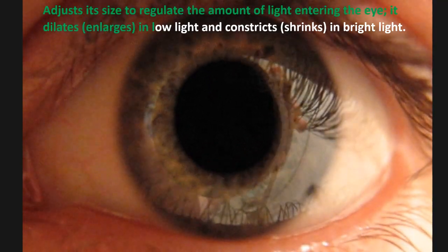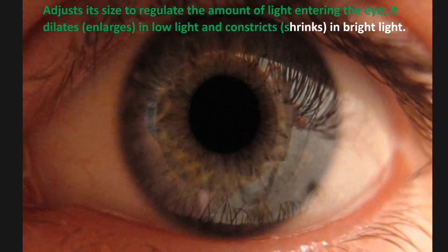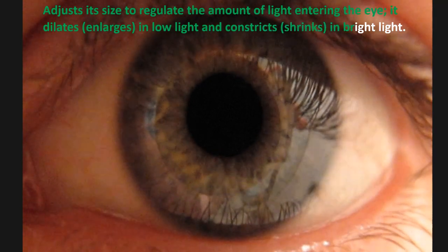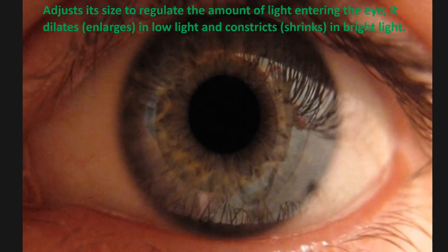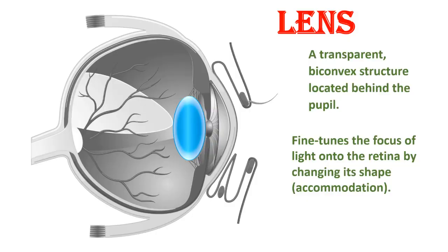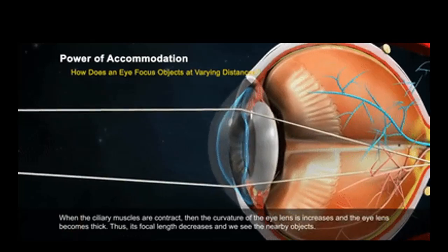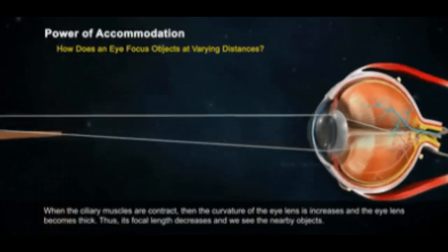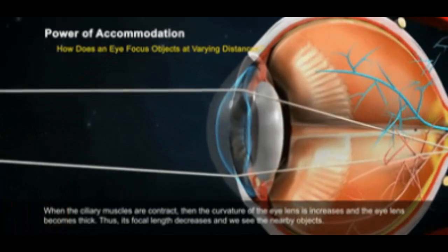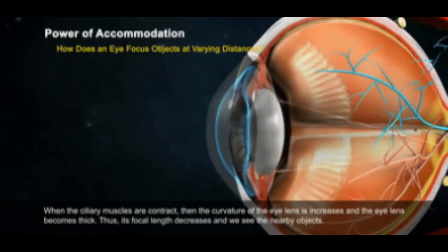The pupil dilates (enlarges) in low light and constricts (shrinks) in bright light. Lens: A transparent, bi-convex structure located behind the pupil that fine-tunes the focus of light onto the retina by changing its shape — a process called accommodation.